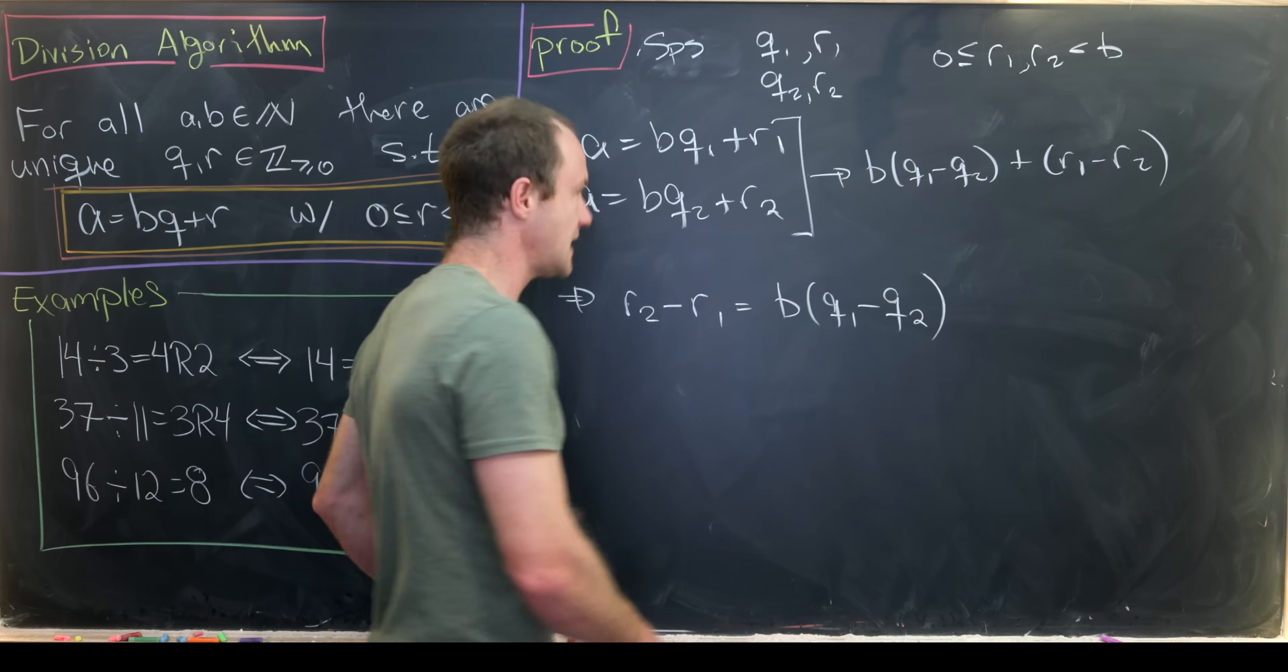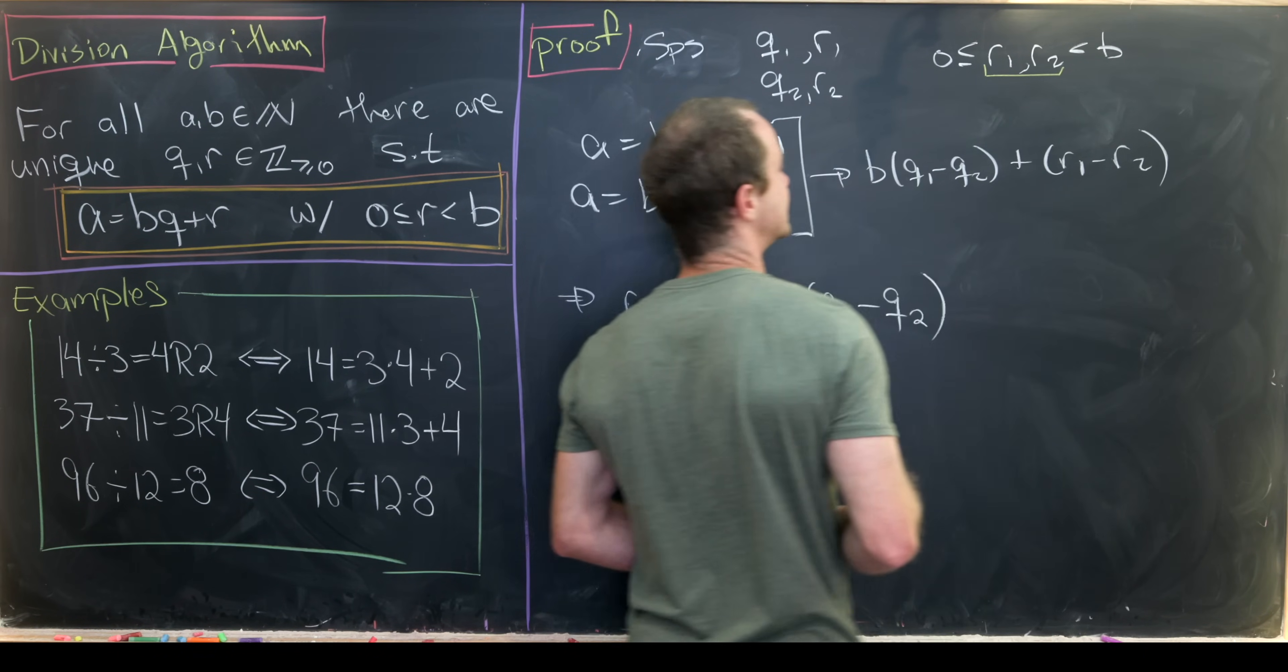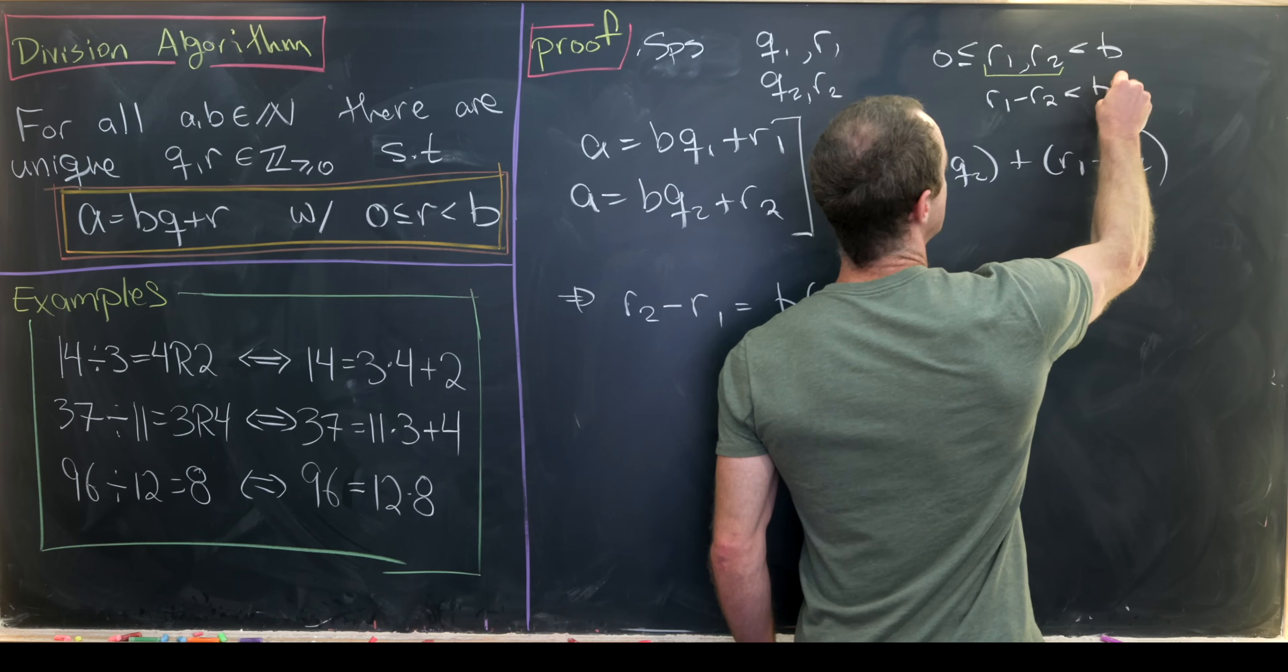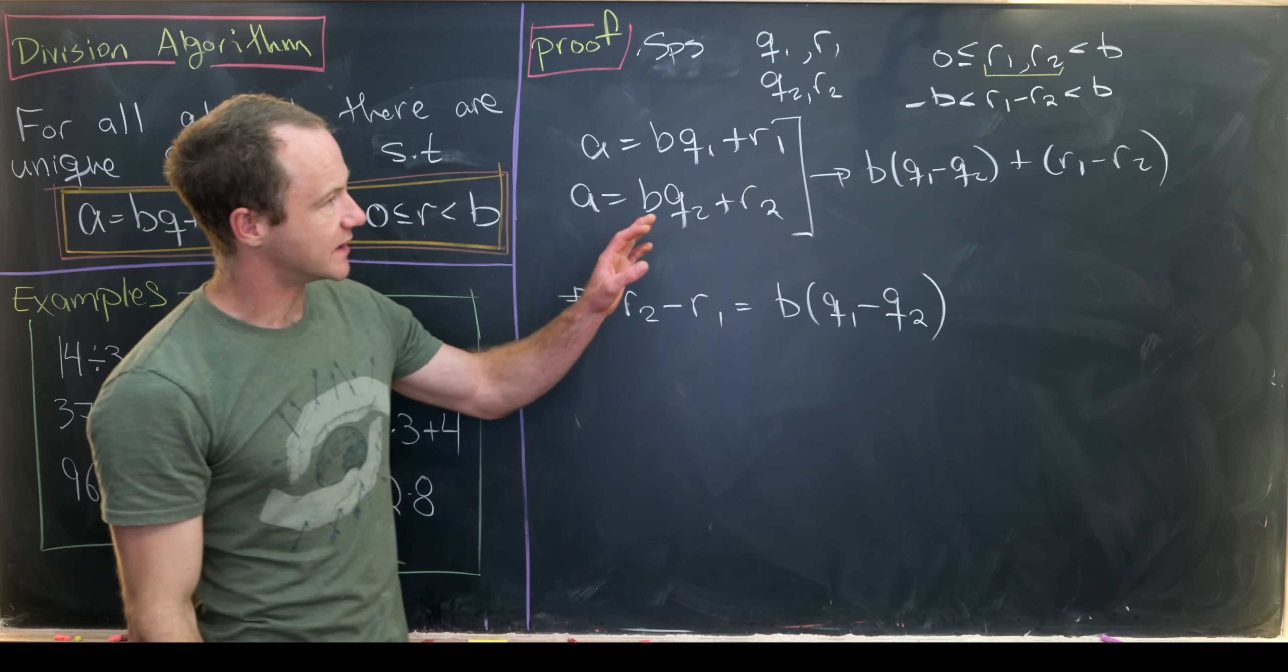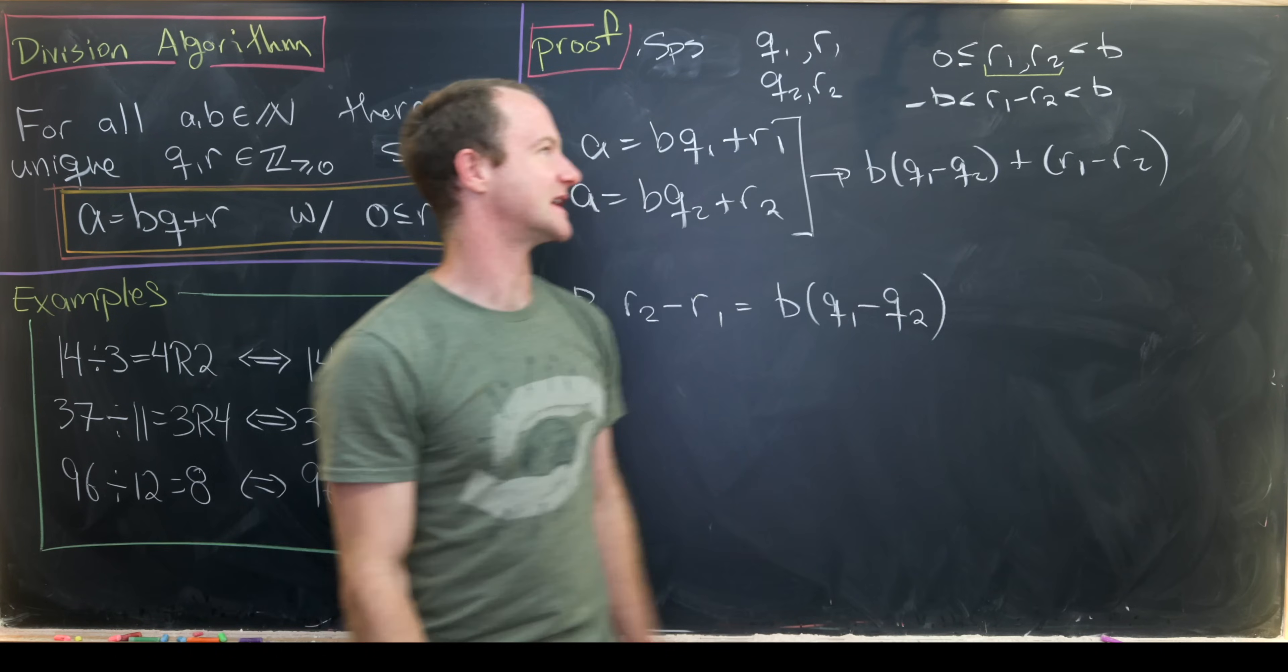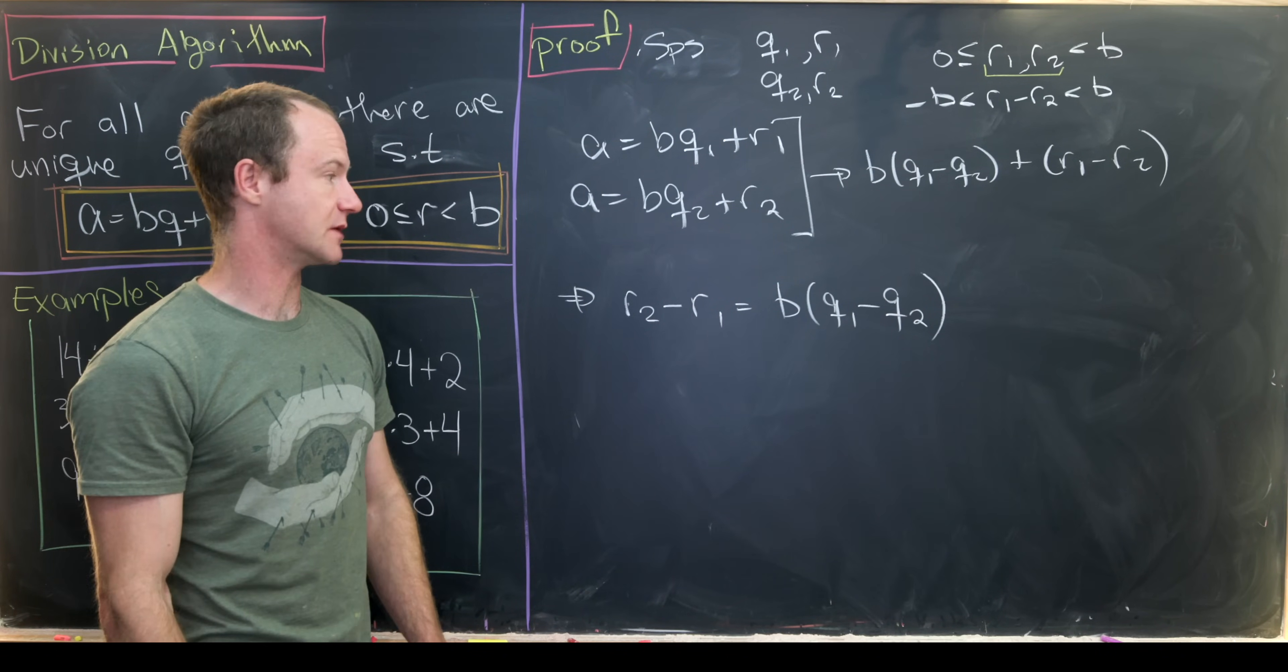But now let's go up here and notice—because r1 and r2 are between 0 and b, that means that r1 minus r2 is strictly between negative b and b. So it can't be equal to negative b and it can't be equal to b again because of that setup right there. It's strictly between those two numbers.